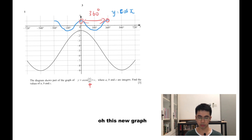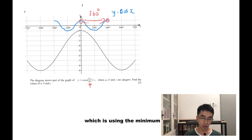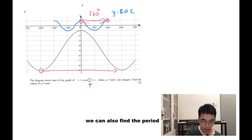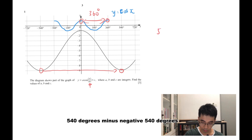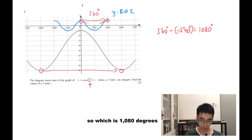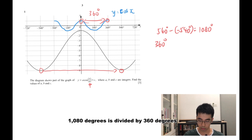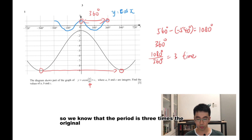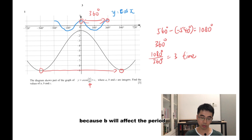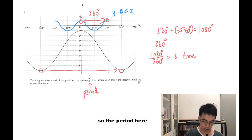For this new graph, we don't have two maximums visible, so we use the minimums instead. Between the two minimums, we can also find the period. The period for the new graph is 540 degrees minus negative 540 degrees, which equals 1080 degrees. The original period is 360 degrees, so the new period is 1080 divided by 360, which equals 3. So the period is 3 times longer, meaning the value of b must be 3.